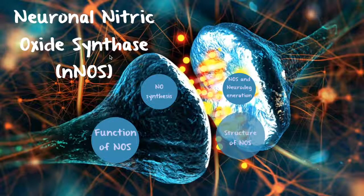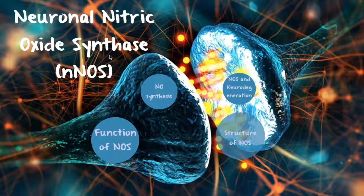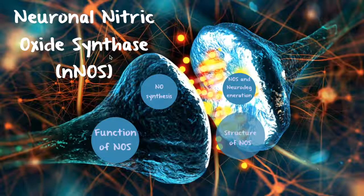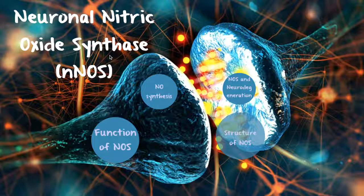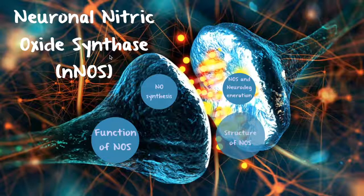The protein I chose is neuronal nitric oxide synthase. Nitric oxide synthase in general is an enzyme that produces nitric oxide, which is a colorless gas consisting of a nitrogen atom and an oxygen atom. It is used in two ways in your body: one for signaling and two for attack. It is produced continuously at low levels by cells, where it acts as a messenger controlling functions such as the contraction of muscle cells and the growth of nerve cells.